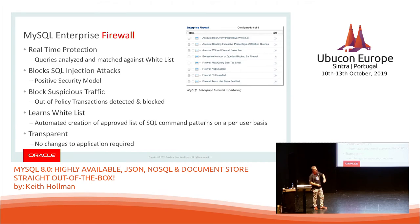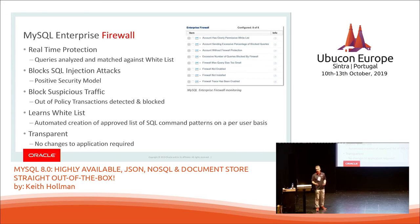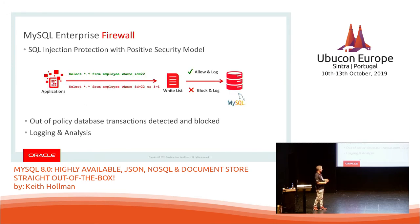On the top right you'll see the Enterprise Firewall, part of Enterprise Monitor, alerting of what's happening within firewall. That's an example where somebody's added OR 1=1 — that will be blocked by firewall.